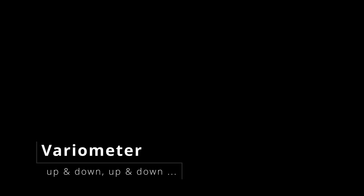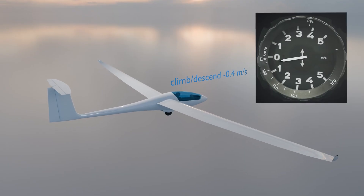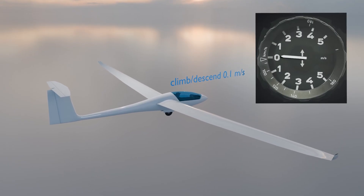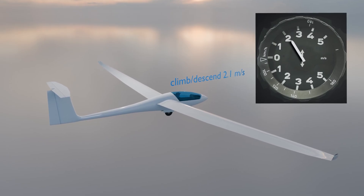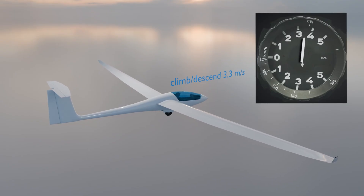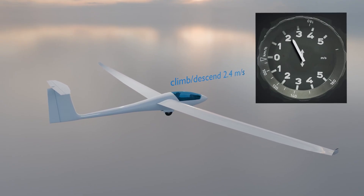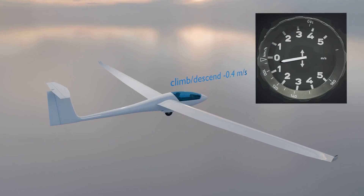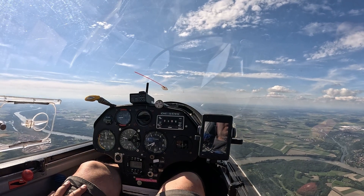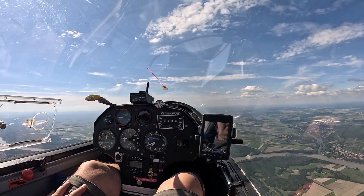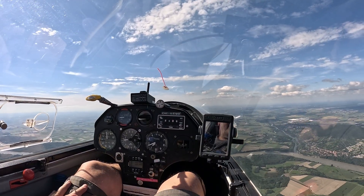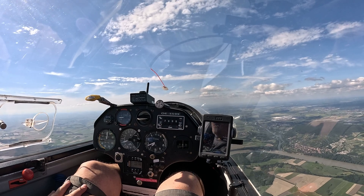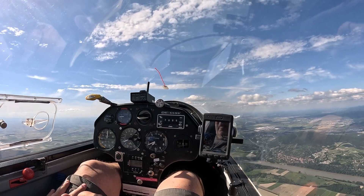The variometer indicates the vertical climb or descent rate in meters per second or feet per second, relative to the surrounding air. For easier visual interpretation, the needle points upward when climbing and downward when descending. Additionally, a sound can be activated — a deeper continuous tone as the glider descends, and a progressively higher-pitched rapid beeping when climbing.